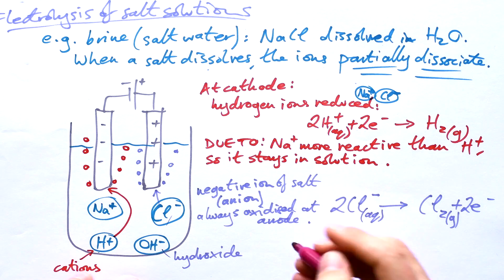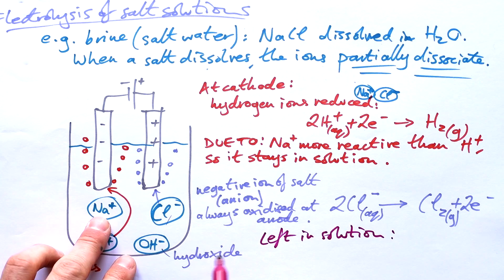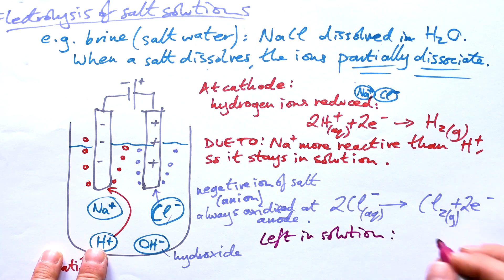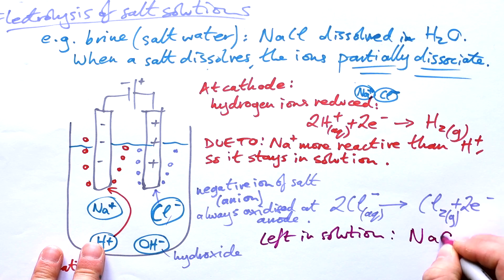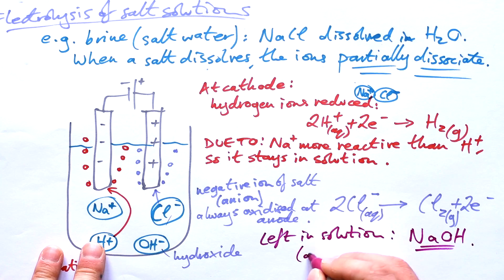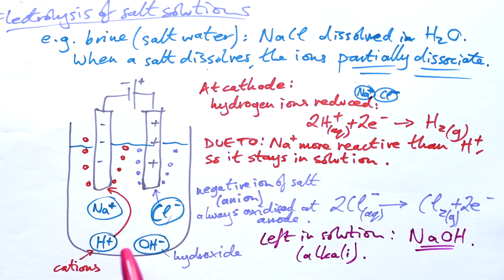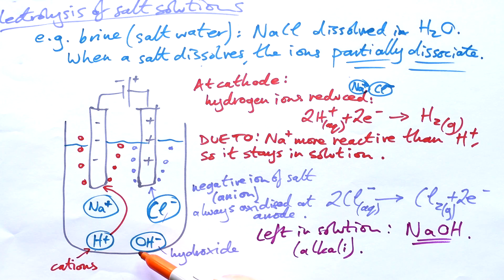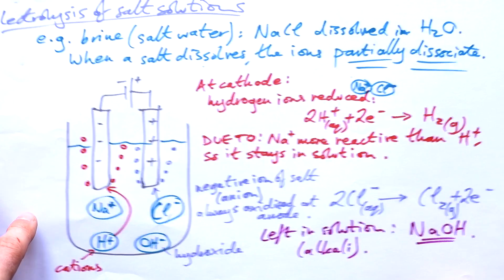So what does that mean we're left with in solution? Well, we have sodium left over and we have hydroxide ions left over. So therefore, we have sodium hydroxide. This is an alkali, and that can be used to make bleach and all kinds of different stuff as well. Just by electrolyzing salt water, brine, you can get three very useful substances: hydrogen gas, chlorine gas, and sodium hydroxide. Incidentally, if this was say copper sulfate, because copper is less reactive than hydrogen, copper would actually end up being produced at the cathode instead of hydrogen.